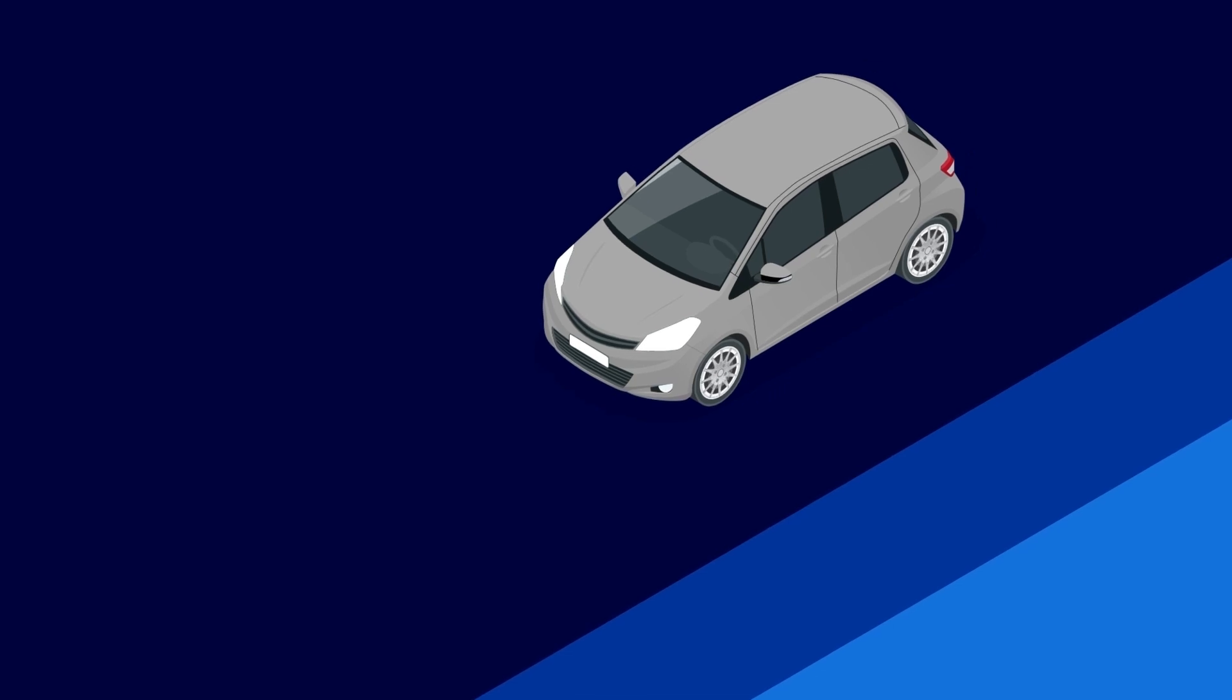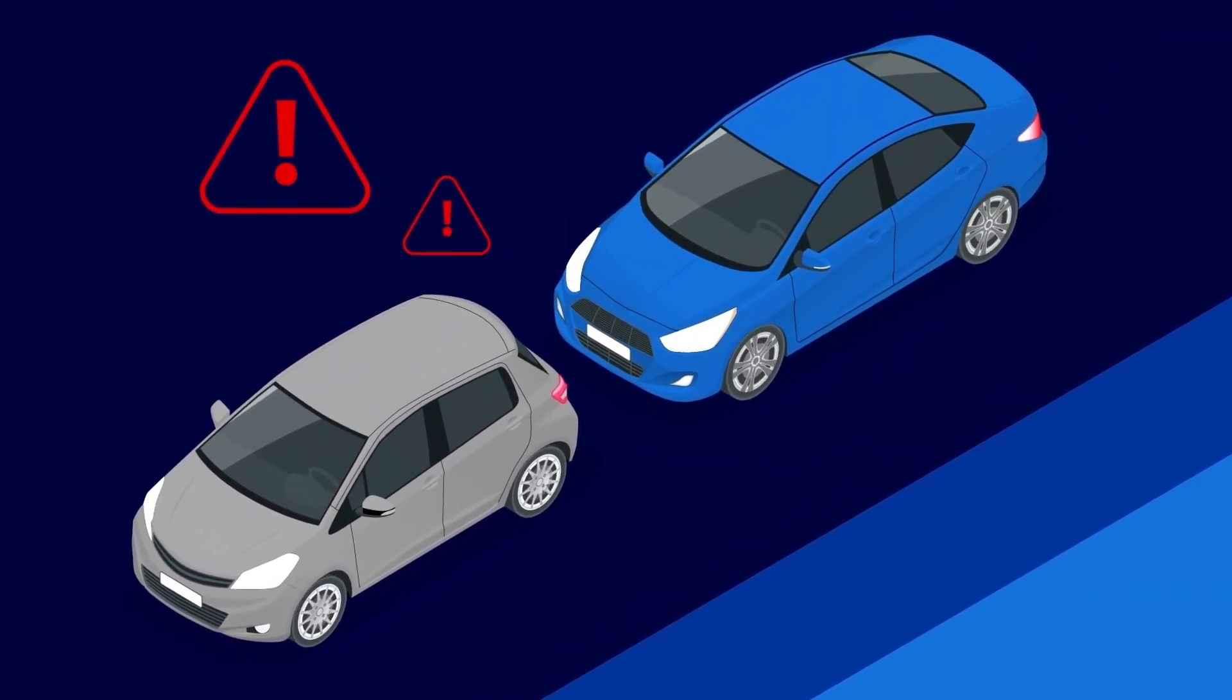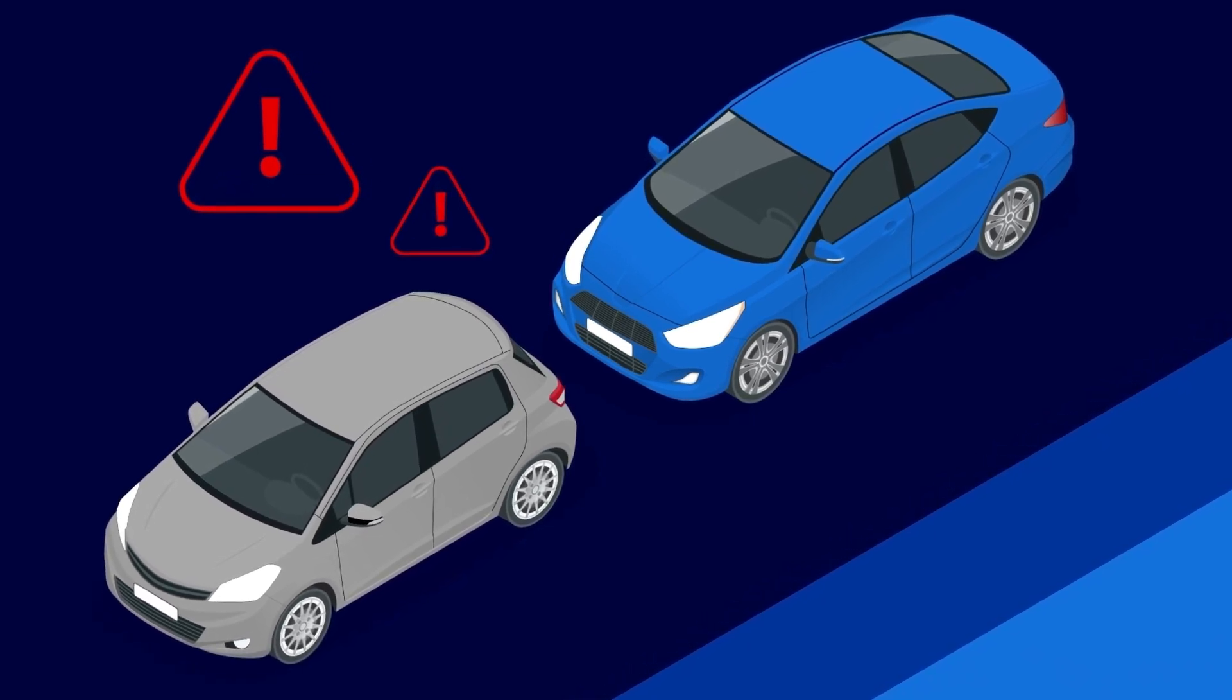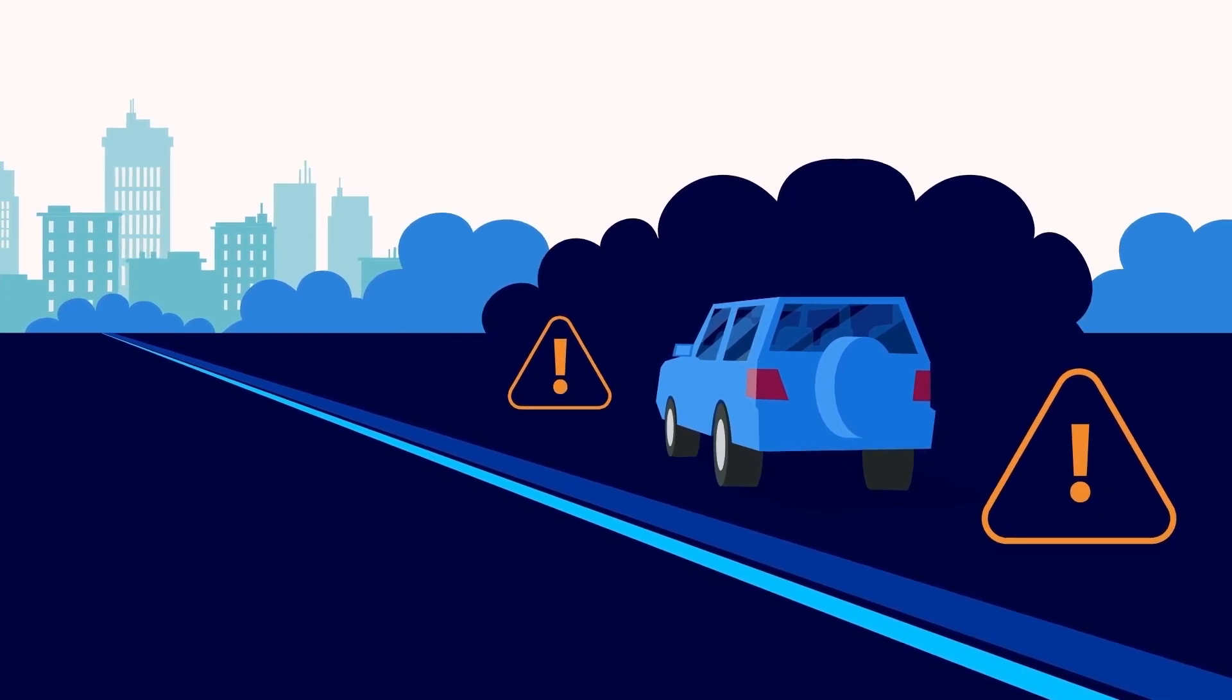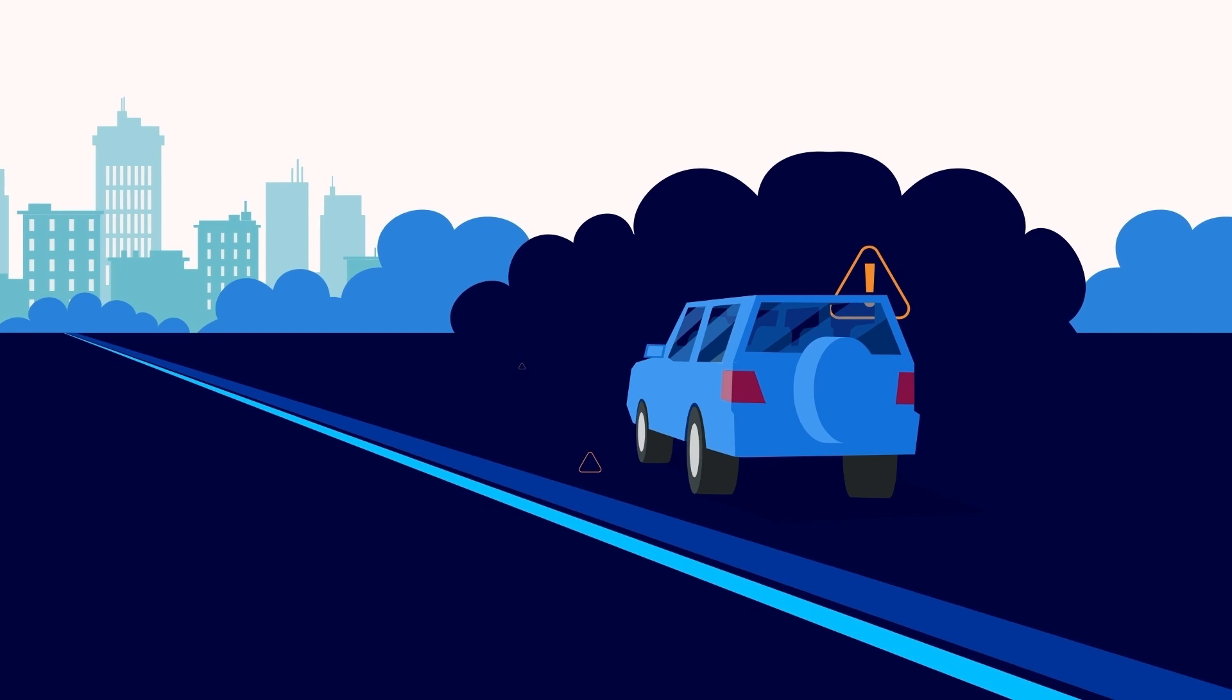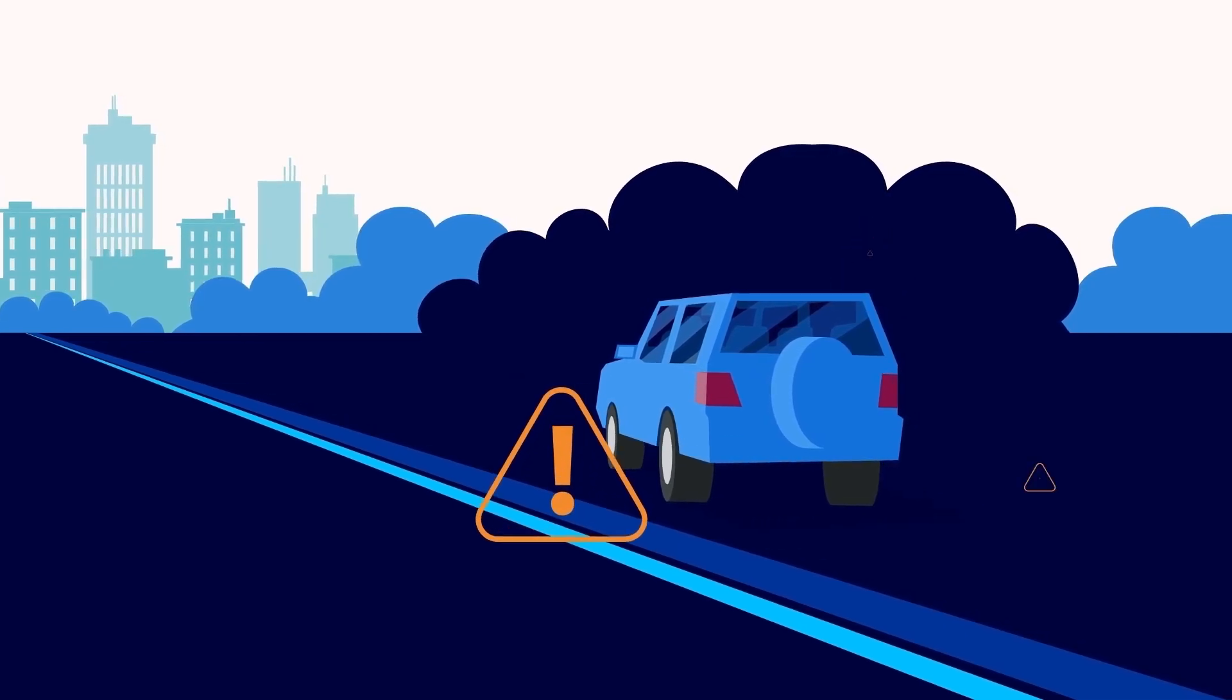Software-defined vehicles are evolving quickly. One of the key features of SDVs is greater safety. Software-defined vehicles can control the full range of car systems in an emergency. That means everything from increasing self-driving capabilities to prevent accidents, to the car's ability to summon help and proactively send first responders the information they need before they even arrive at the scene.